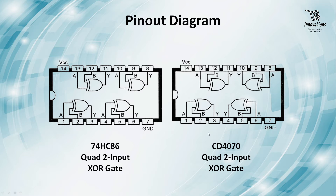For CD4070, the first segment has input pins 1 and 2, output pin 3; second segment input pins 5 and 6, output pin 4; third segment input pins 8 and 9, output pin 10; fourth segment input pins 12 and 13, output pin 11. The power pins are the same — pin 14 for positive power supply and pin 7 for negative power supply.